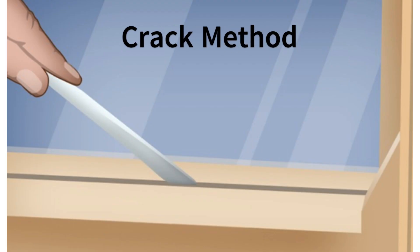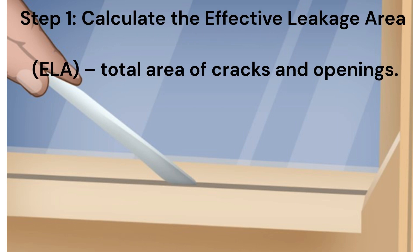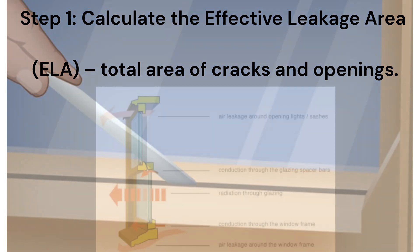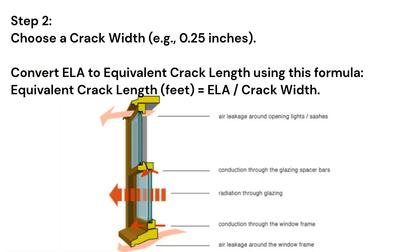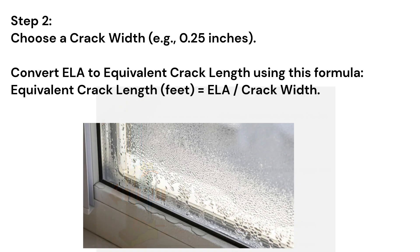Let's move on to the crack method. The crack method simplifies infiltration estimation by treating all openings as one continuous crack. Here is how to calculate infiltration step by step. Step 1: calculate the effective leakage area — the total area of cracks and openings. Step 2: choose a crack width, for example 0.25 inches.